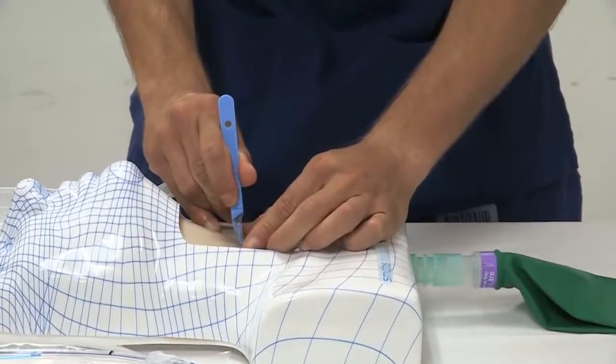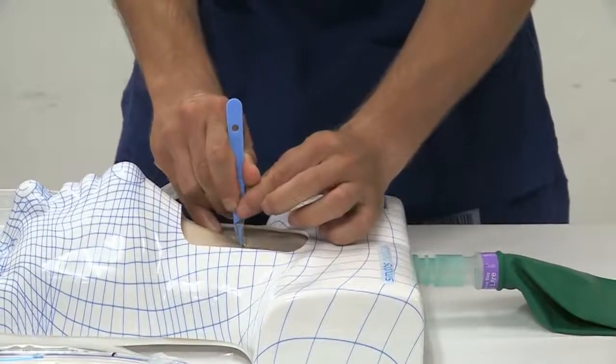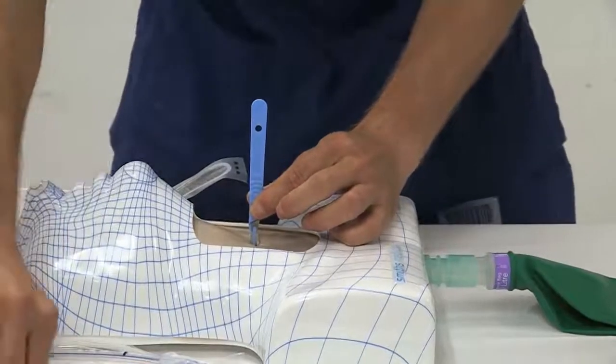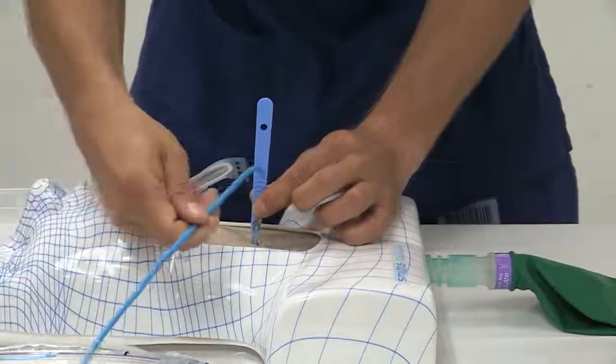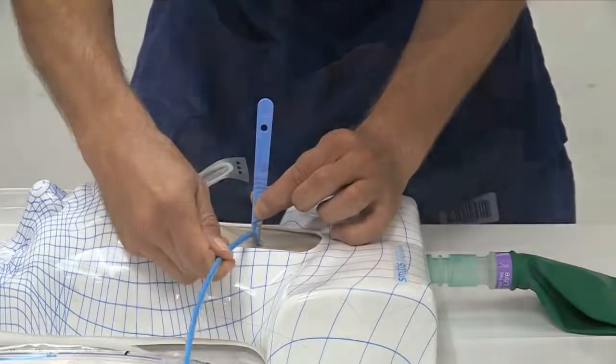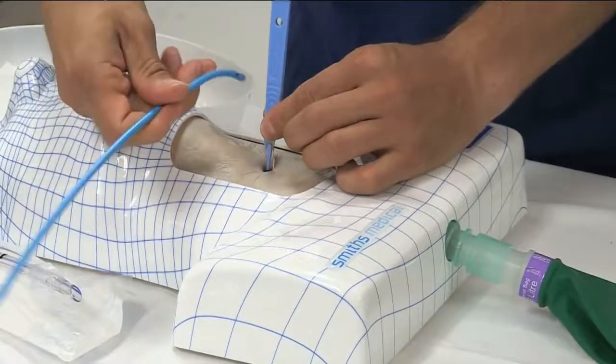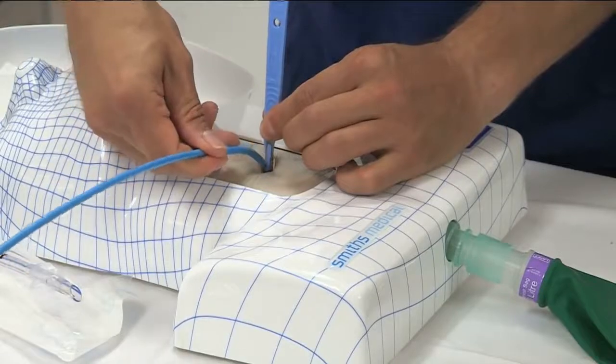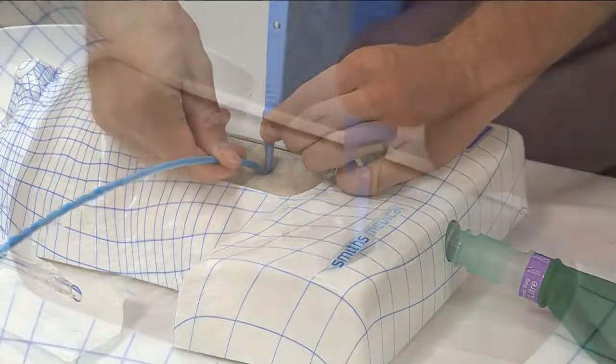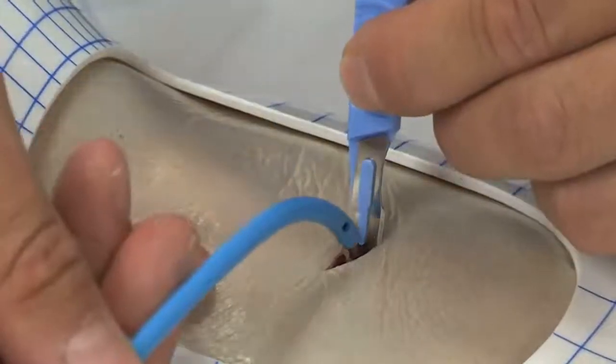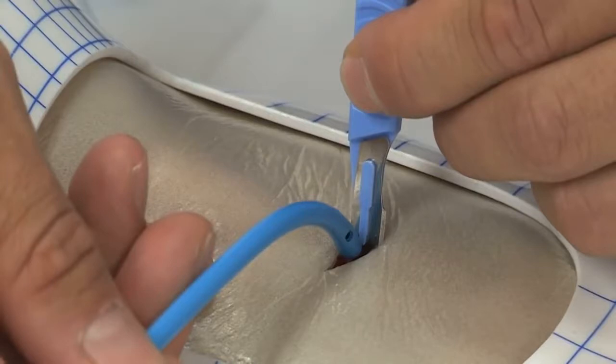The operator should now switch hands so that the non-dominant hand holds the scalpel. The dominant hand now holds the bougie parallel to the floor, pointing away from the anesthetist. The tip of the bougie is then inserted into the airway whilst maintaining contact with the scalpel blade and using the blade as a guide into the opening of the airway.